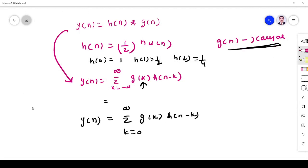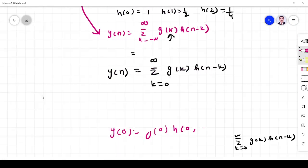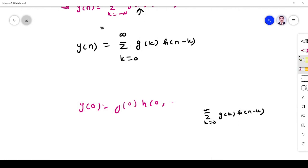And given y of 0 is 1. So let us see. So y of 0 is 1. So y of 0, which is equal to 1, which is equal to k equals 0, g of 0. The n is 0, so h is 0 minus 0, h of 0.